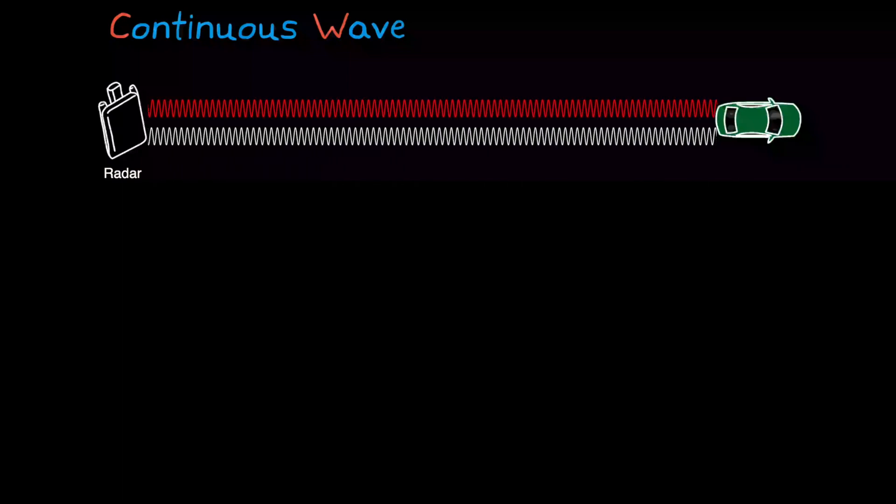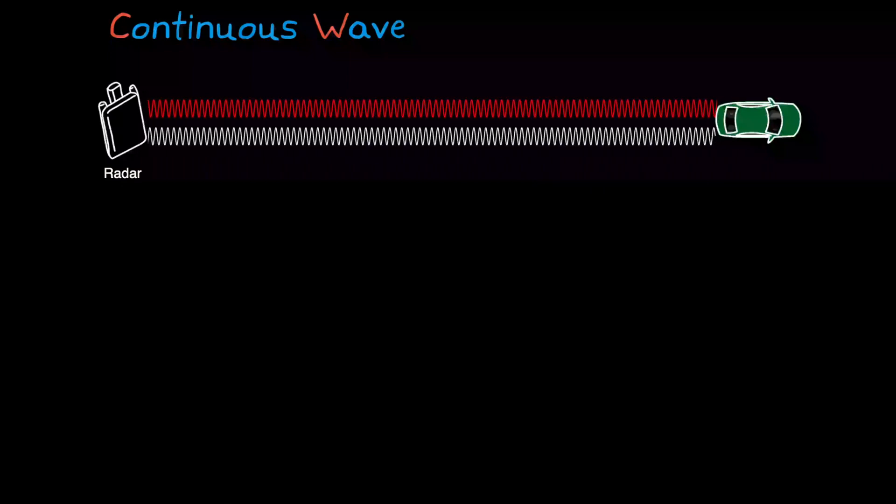To begin, let's just look at the second half of FMCW. What is continuous wave radar? As the name suggests, this is a type of radar system that transmits a known stable frequency continuously. That wave propagates out, reflects off an object, and is received continuously by the radar.